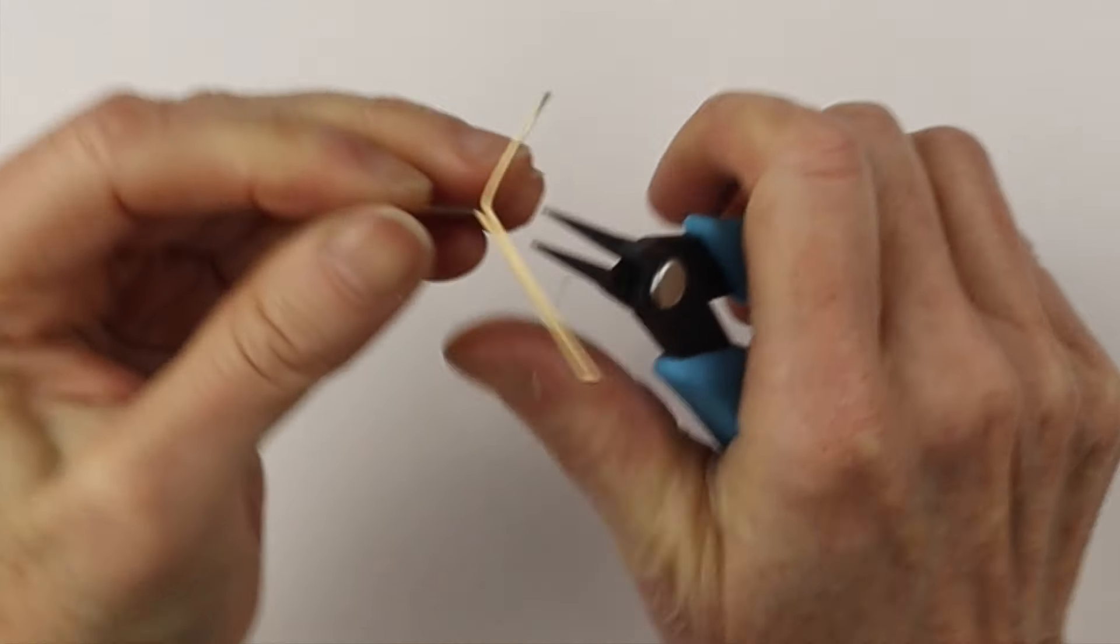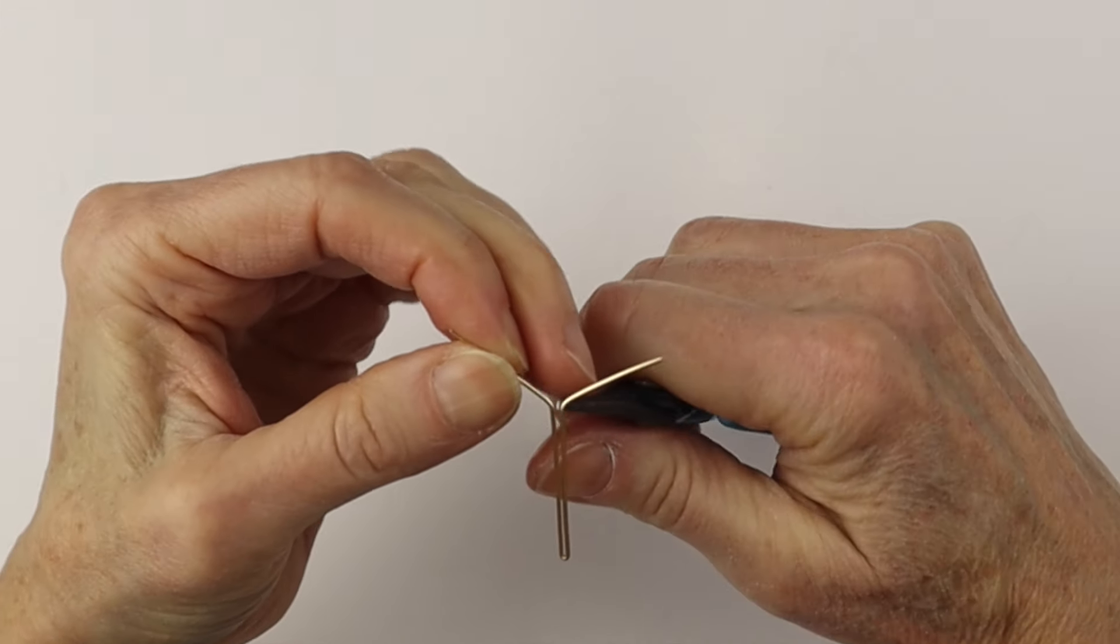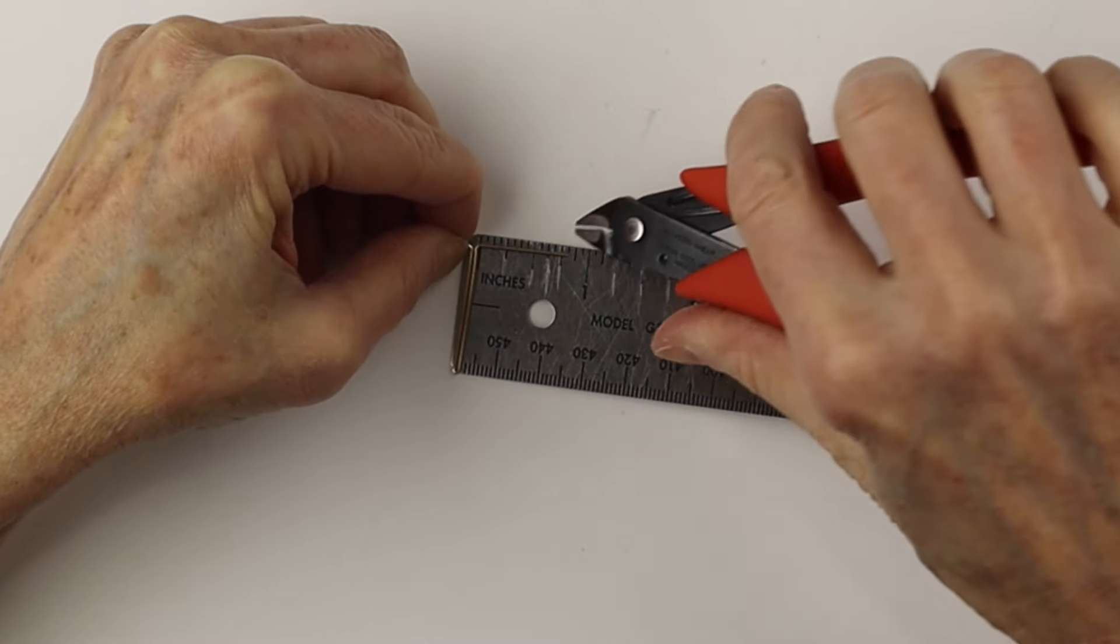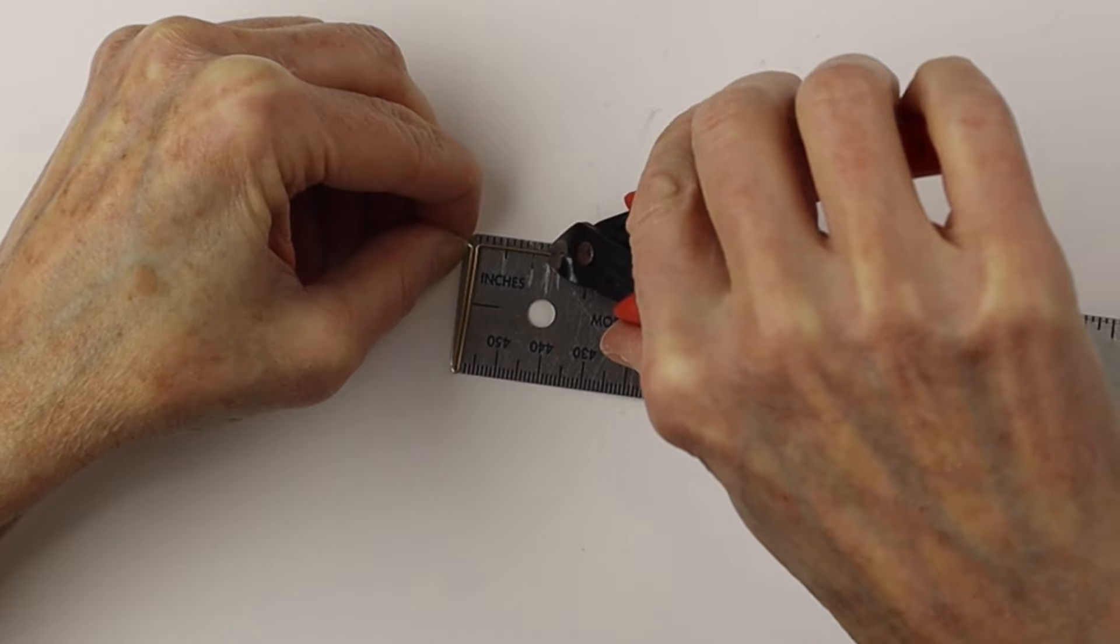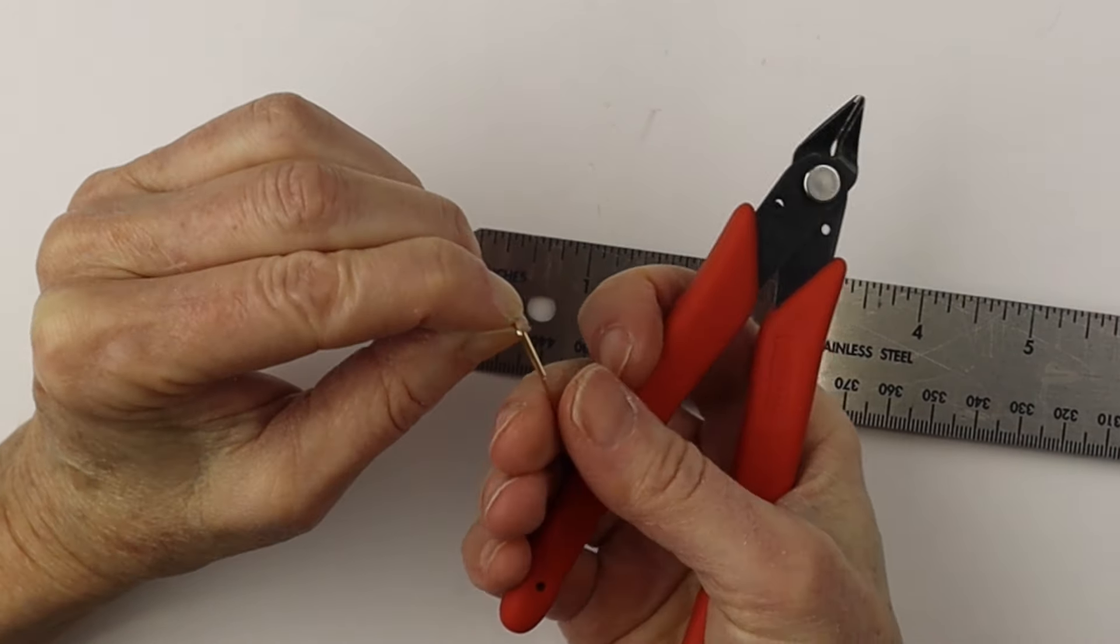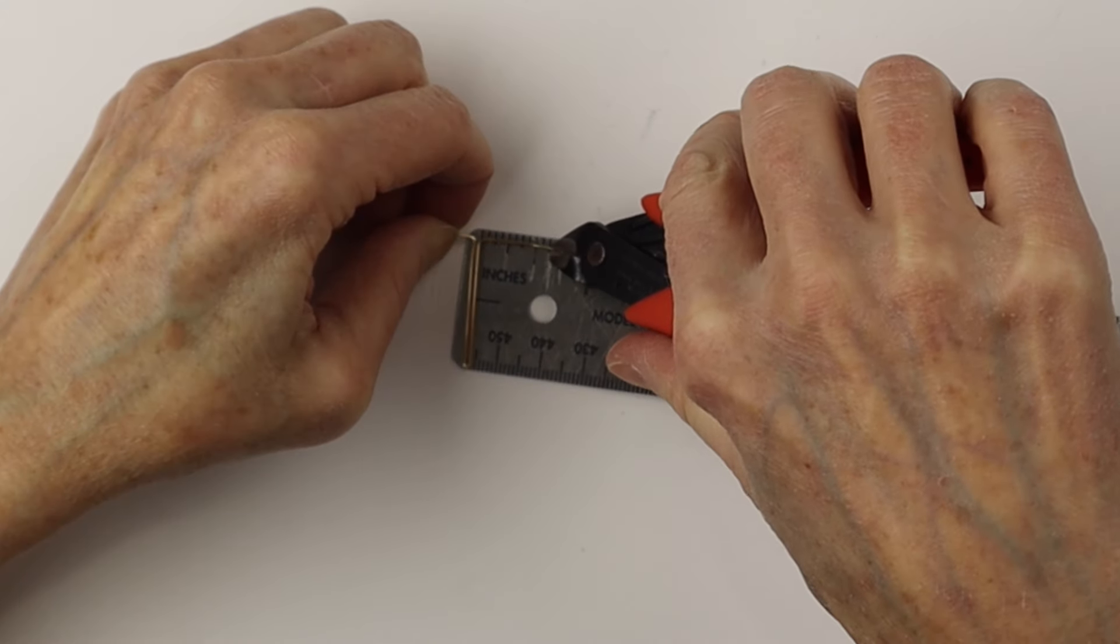We're just going to take that wire and bend it to either side, so bend it straight out at a right angle.